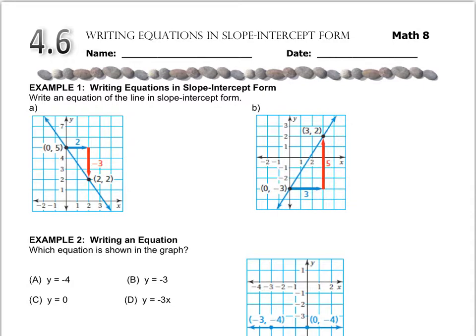Just as a reminder, the form for slope-intercept is y equals mx plus b. m stands for the slope and b stands for the y-intercept. Alright, so here we go.